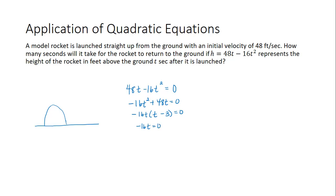We get negative 16t equals 0 or t minus 3 is equal to 0. So dividing by negative 16, we get t is equal to 0. And then adding 3, we get t is equal to 3.